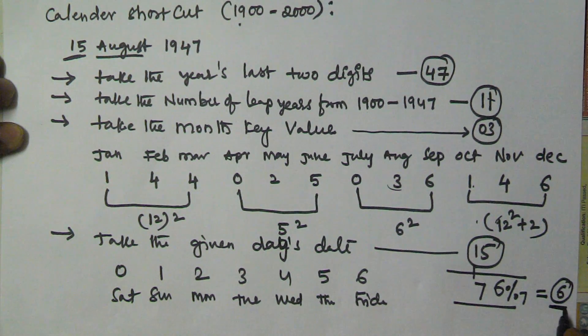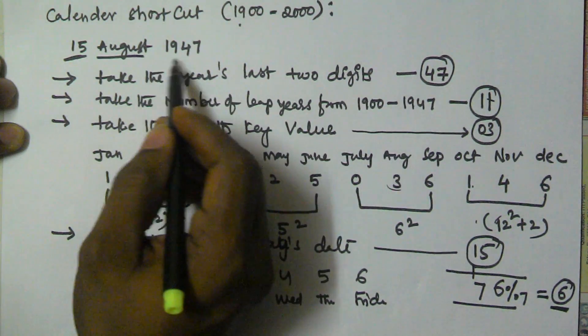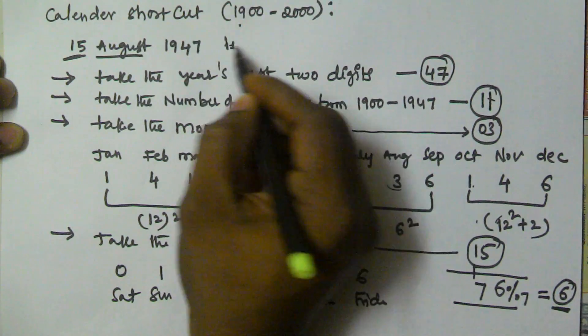We got 6, which is why the weekday on 15th August 1947 is Friday.